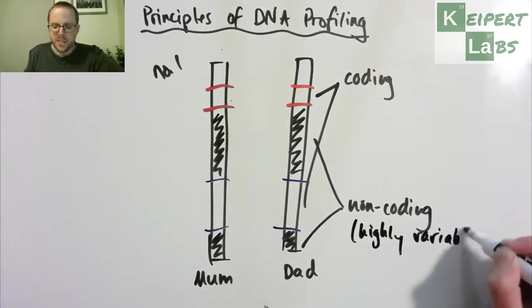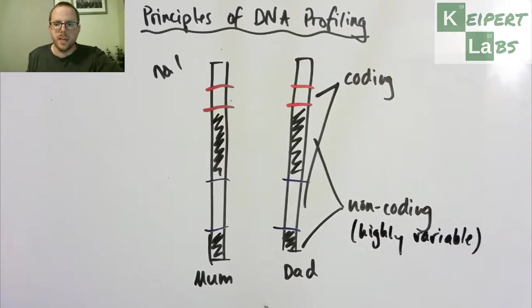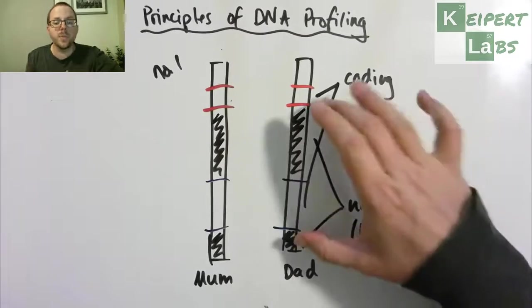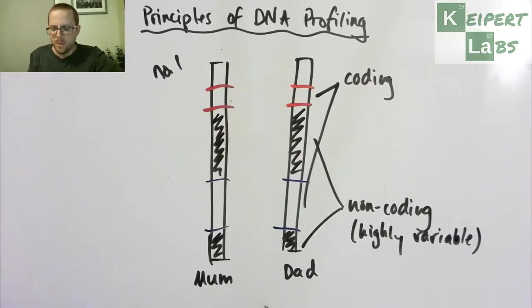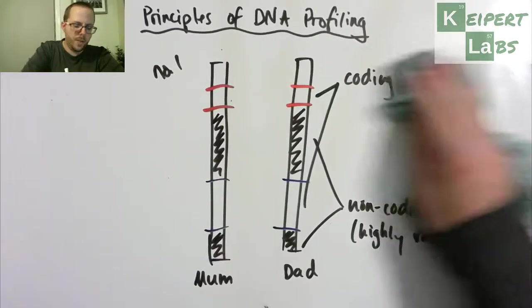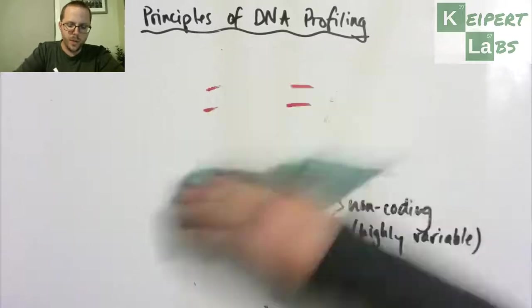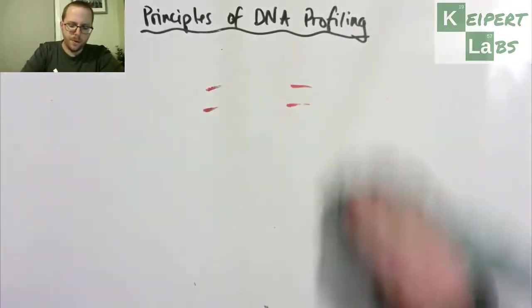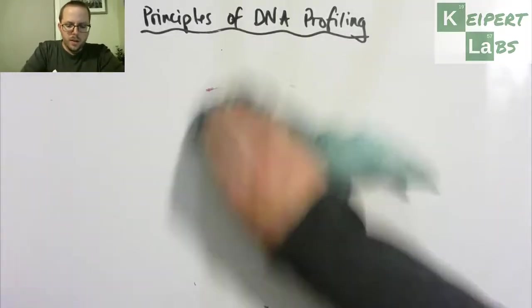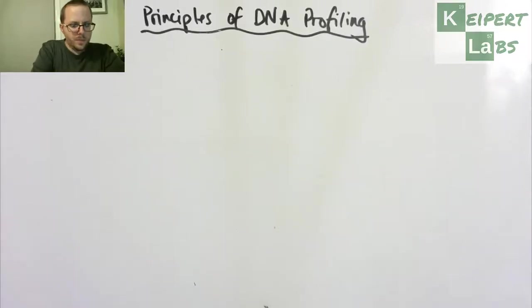Whereas the coding regions tend to be much less variable. You don't have an infinite number of possibilities of what the code is at those sections otherwise they wouldn't give rise to particular features. But the ones that don't seem to give rise to particular features vary a lot between people and I'm going to show you how they vary.